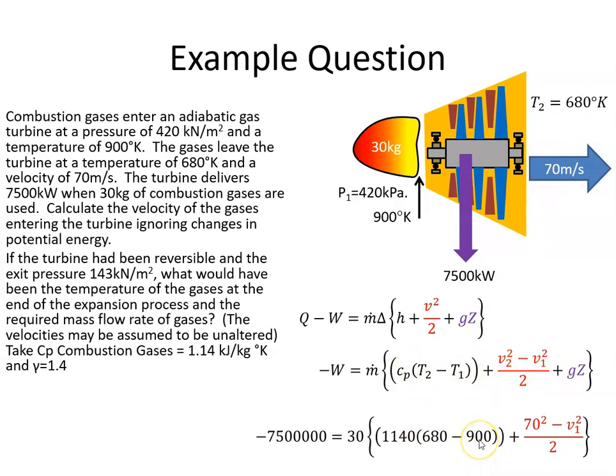T2 is 680, T1 is 900. V2, we're saying, is 70. I'm going to ask to find V1. So, what is the velocity of gases entering the turbine?